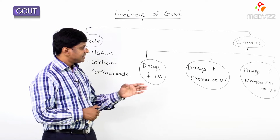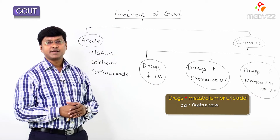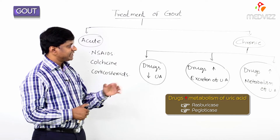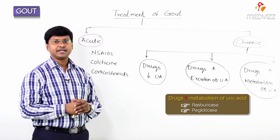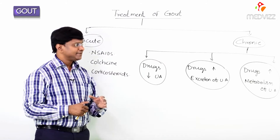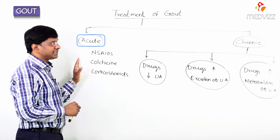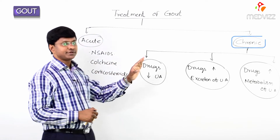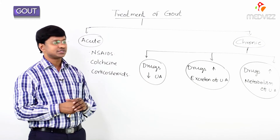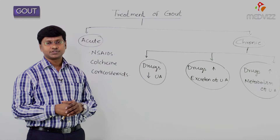The drugs which increase the metabolism of uric acid are rasburicase and pegloticase. Now let me take up the detailed discussion of acute gout and chronic gout, and discuss the individual drugs and how they play a role in the treatment of gout.